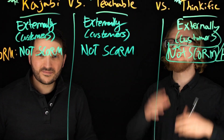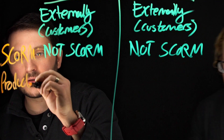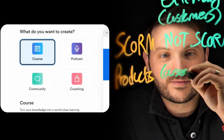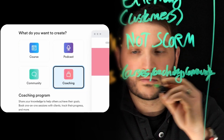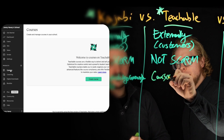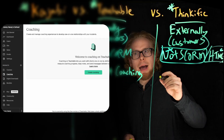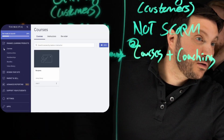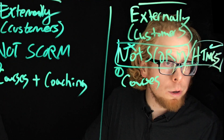The next piece is the products you can offer to your learners. Kajabi has four products: courses, coaching, community, and podcasts. Teachable has two products: courses and coaching. Thinkific has just courses — that's it. So between all these, obviously Kajabi wins on product variety. It has the most, but is more always better? Let's get to the features.